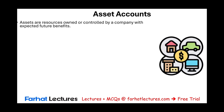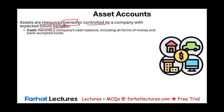Let's review what assets are and name some common accounts. Assets are resources owned or controlled by a company that are expected to provide future benefits. The most common asset account is cash. Cash includes money, bank-accepted funds, travelers checks, coins, and foreign currency. The cash account keeps track of all cash at the company.